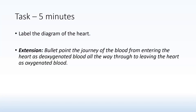The task for you now is to go back to the blank diagram of the heart and see if you can identify all four chambers, all the vessels, and also the valves. There's also a little extension task: see if you can bullet point the journey of the blood from entering the heart as deoxygenated blood all the way through to leaving the heart as oxygenated blood. If you're struggling, just rewind the video and look at the pathway of the red blood cell.